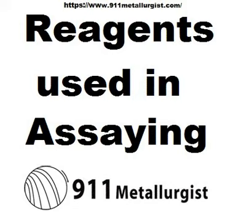Dilute sulphuric acid is made by diluting one volume of the strong acid with four of water. Tartaric acid, C4H6O6, is a crystallized organic acid soluble in less than its own weight of water, or in less than three parts of alcohol; it is used for the same purpose as citric acid. The solution is made when required.